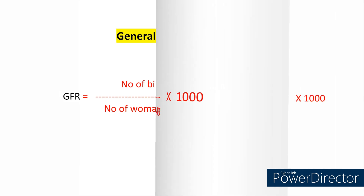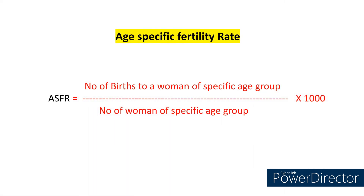Similarly, Age-Specific Fertility Rate. In this case, we will be considering only a specific age group both in the numerator and in the denominator. So ASFR or age-specific fertility rate is equal to number of births to a woman of specific age group divided by number of women of specific age group, multiplied by 1000.